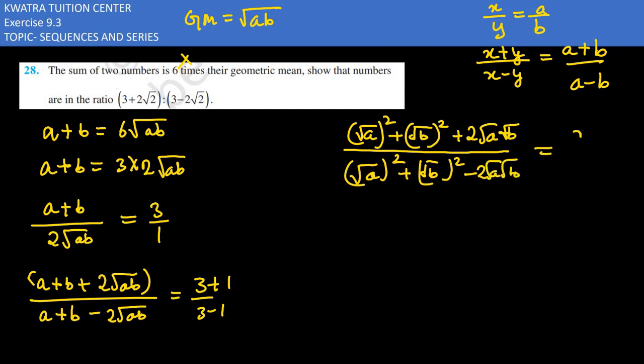Right side we have 2/1. On the left here, we have (√a + √b)² whole square on top. We have (√a - √b)² whole square on bottom. Right side we have 2/1.